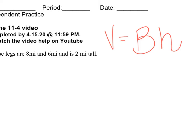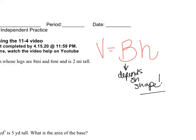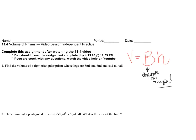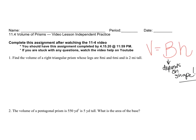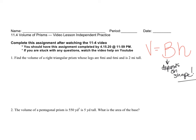We're going to write down that B depends on your shape. It depends on your shape. Could be a triangle, could be a rectangle, could be a trapezoid, could even be an octagon. So make sure you have that V equals Bh written.